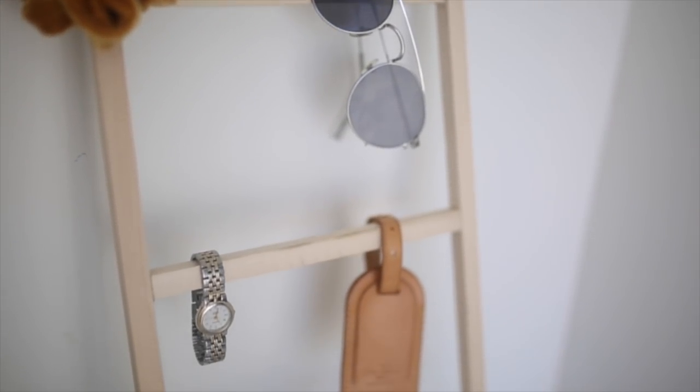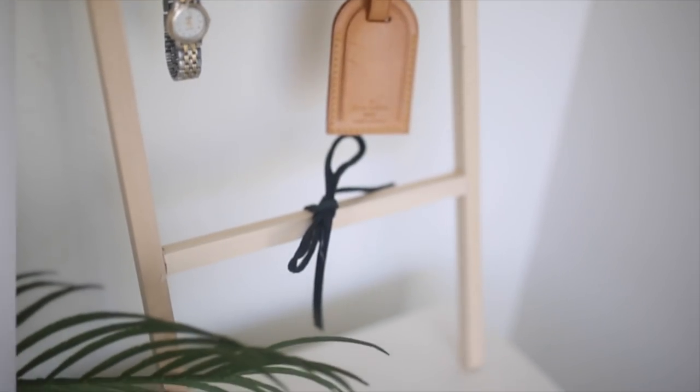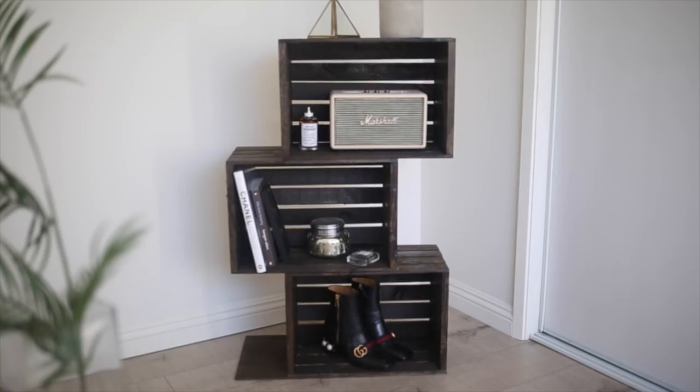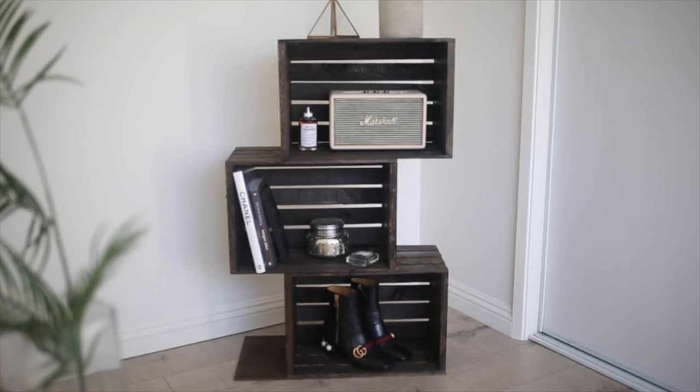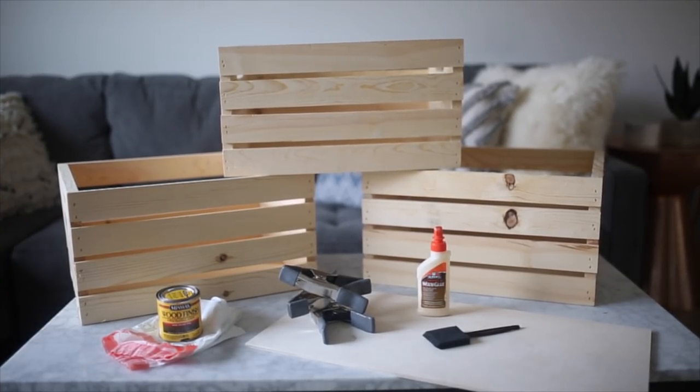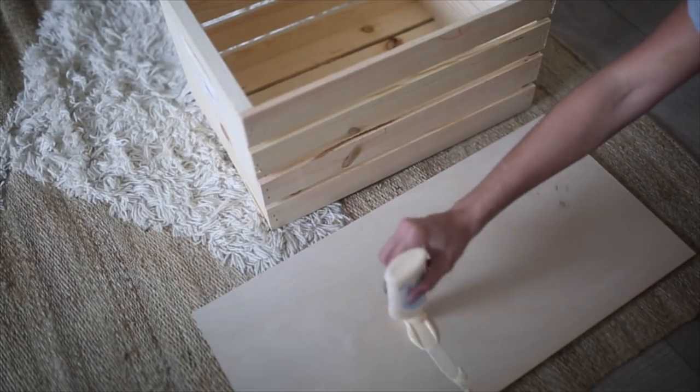Moving on to this shift shelf DIY, this is inspired by a shelf that I saw that was like $300 and I made this for 20 bucks. For this you're going to need three wooden crates - you can get these for like five dollars if you wait for the 50% off sale. You're going to need some wood glue, some metal clamps, a foam brush, a piece of wood the same size as the crates, and then lastly wood stain and something to cover your surface.